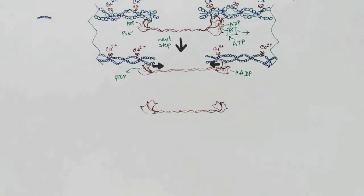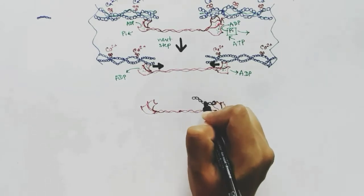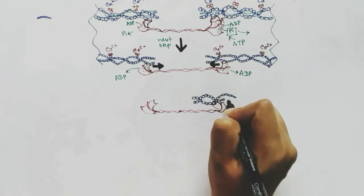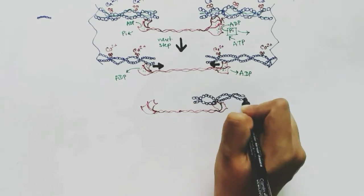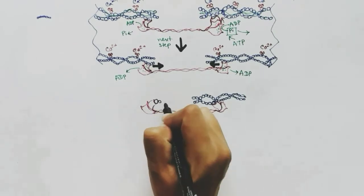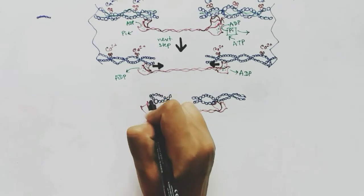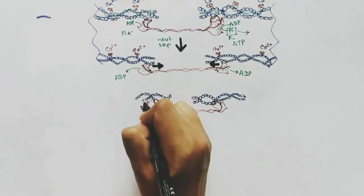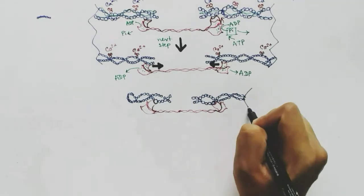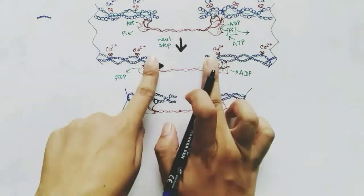The myosin heads pull the actin filaments toward each other. The actin filaments attached to the myosin heads are pushed toward each other, the gap between them decreases, and the length of the sarcomere also decreases with this pull. This is muscle contraction.